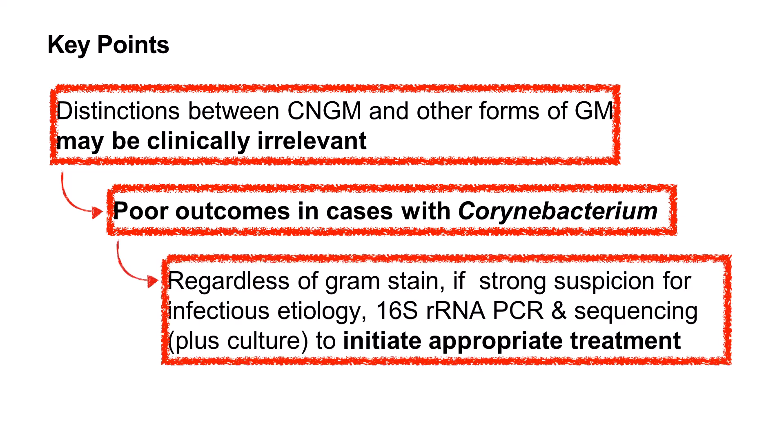As a result, if there is strong suspicion for an infectious etiology regardless of gram stain results, the authors suggest pursuing 16S ribosomal RNA PCR combined with sequencing, in addition to microbial culture, to maximize chances of identifying fastidious species such as coronibacterium, and thus to initiate appropriate treatment.